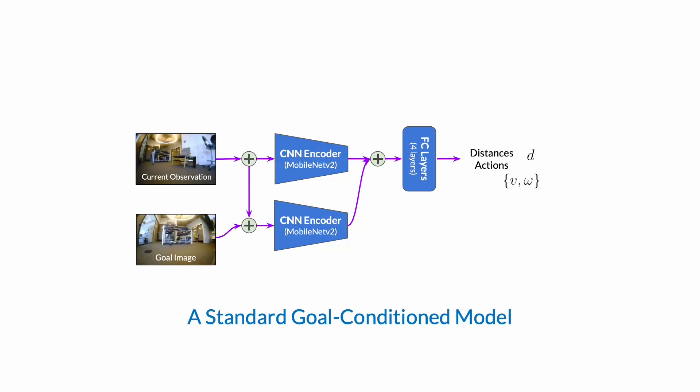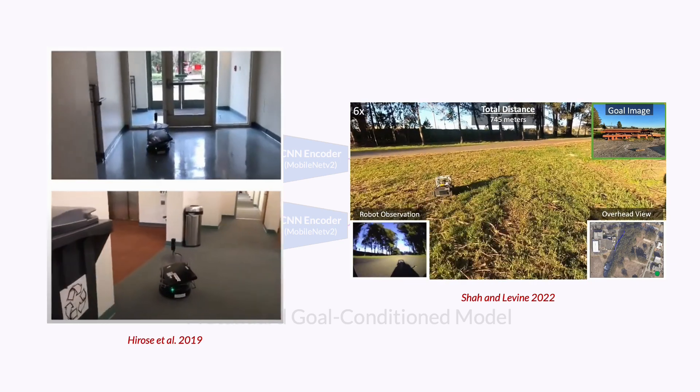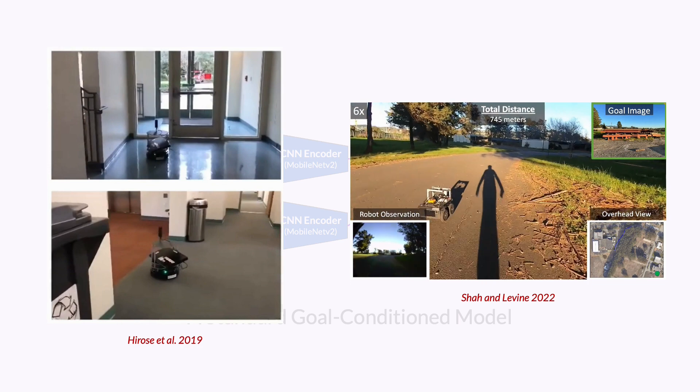We start with a standard goal-conditioned visual navigation model that accepts the current and goal observation as inputs and predicts the temporal distance between them and the best action to navigate to the goal as outputs. Such models have been used in conjunction with topological graphs to enable large-scale navigation in challenging indoor and outdoor environments.